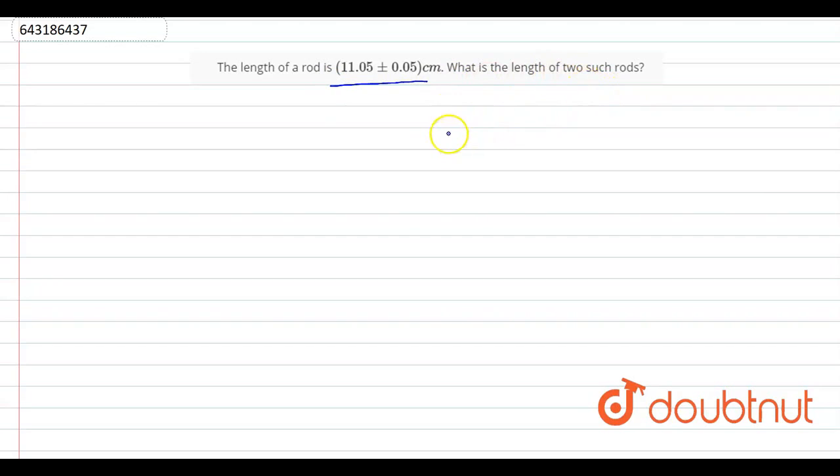So, we need to simply add the length of these two rods. So, we will take L is equal to L1 plus L2.